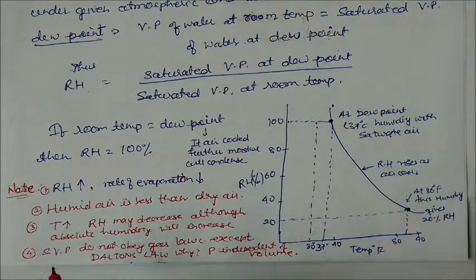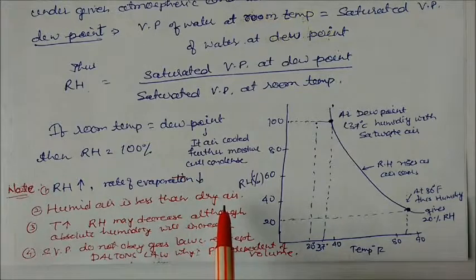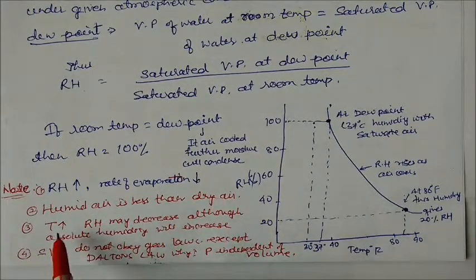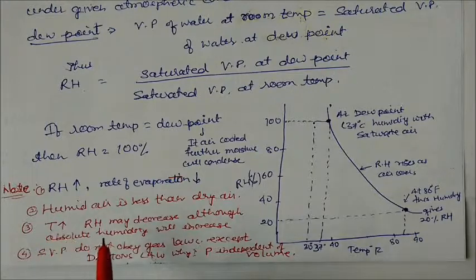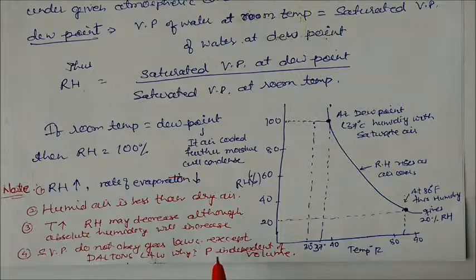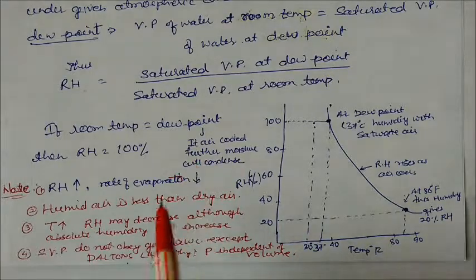If relative humidity increases, rate of evaporation decreases. Humid air is less dense than dry air. If temperature increases, relative humidity may increase or decrease depending on conditions, but absolute humidity will always increase. Saturated vapor pressure does not obey ideal gas laws but obeys Dalton's law, because in Dalton's law pressure is independent of volume.